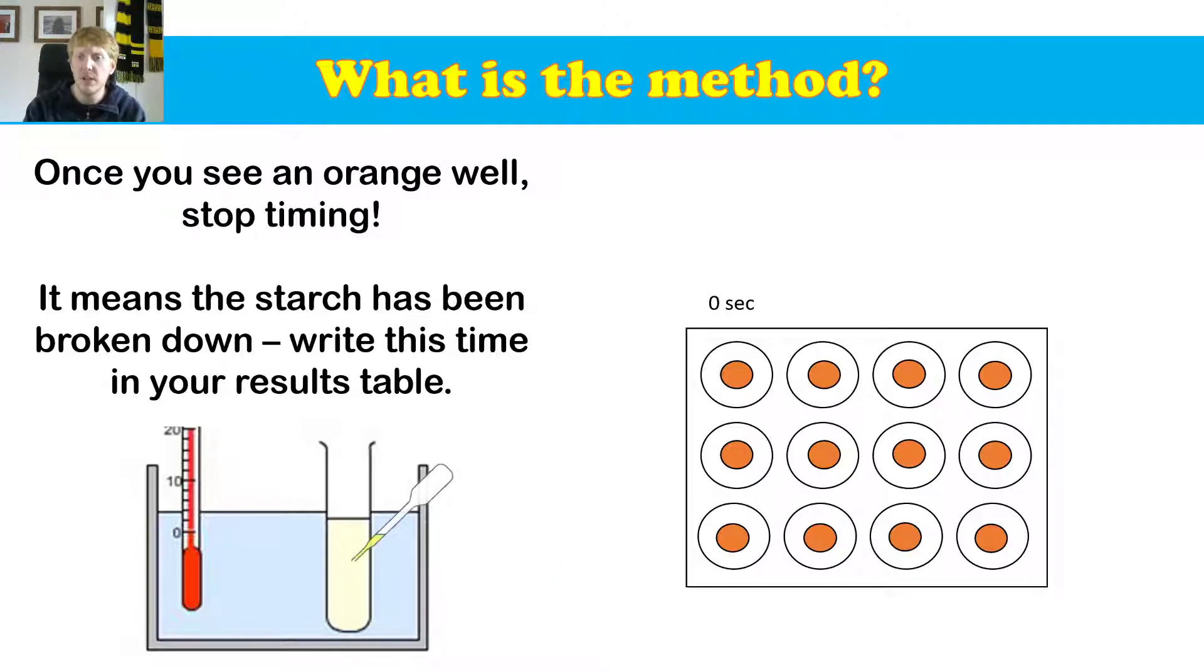And then what we are going to do is we are going to take one of our starch solution. We're going to put it on zero. And as you can see, it turned blue black, which means starch is present.